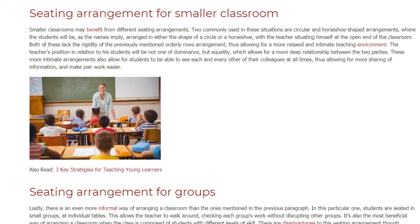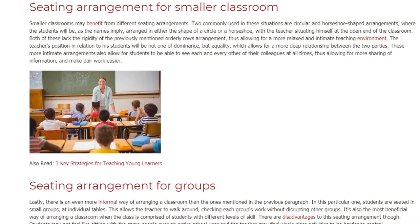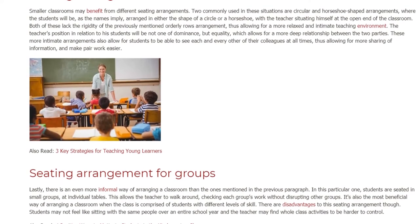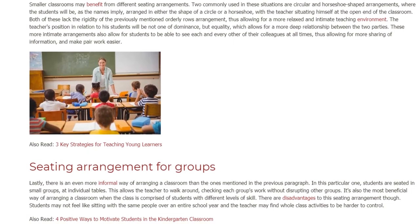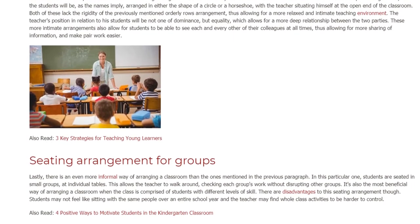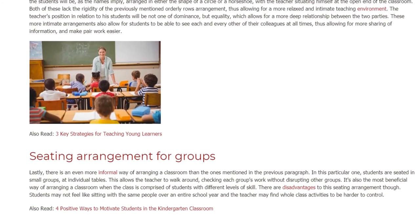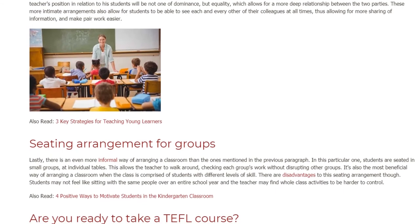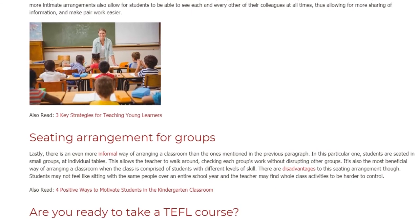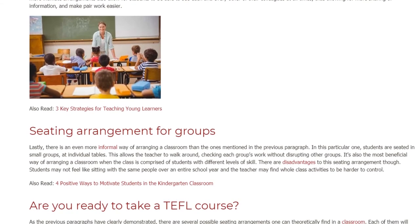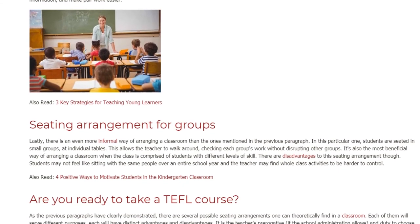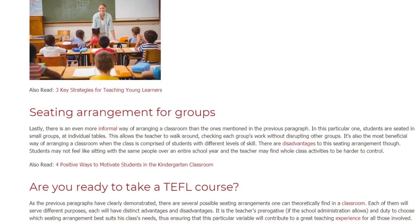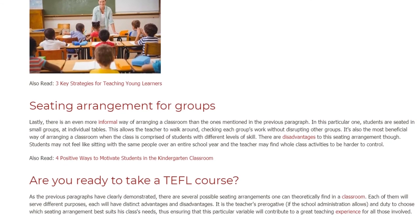Seating Arrangement for Groups. Lastly, there is an even more informal way of arranging a classroom. In this particular one, students are seated in small groups at individual tables. This allows the teacher to walk around, checking each group's work without disrupting other groups. It's also the most beneficial way of arranging a classroom when the class is comprised of students with different levels of skill. There are disadvantages though: students may not feel like sitting with the same people over an entire school year, and the teacher may find whole-class activities harder to control.